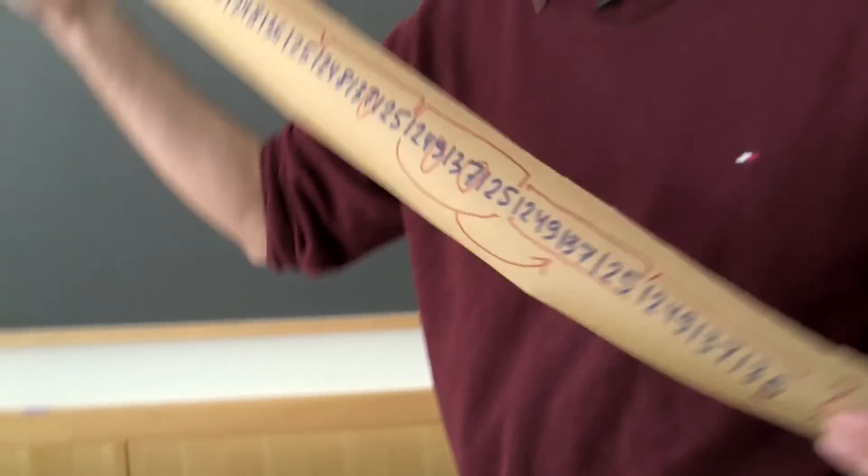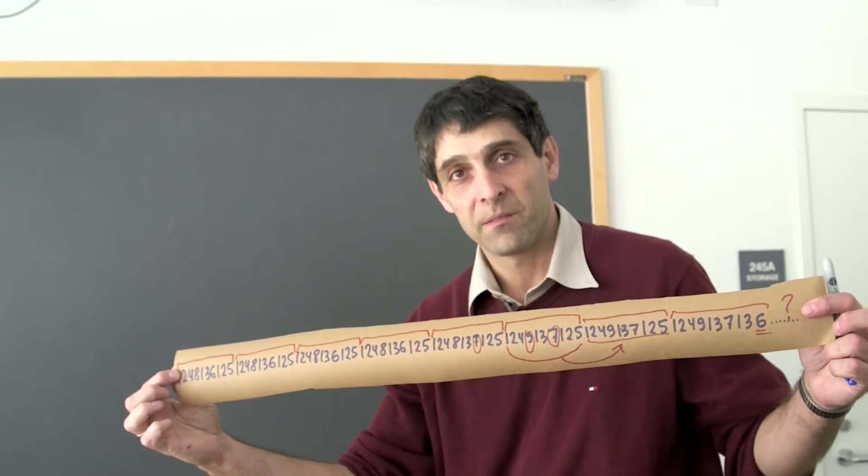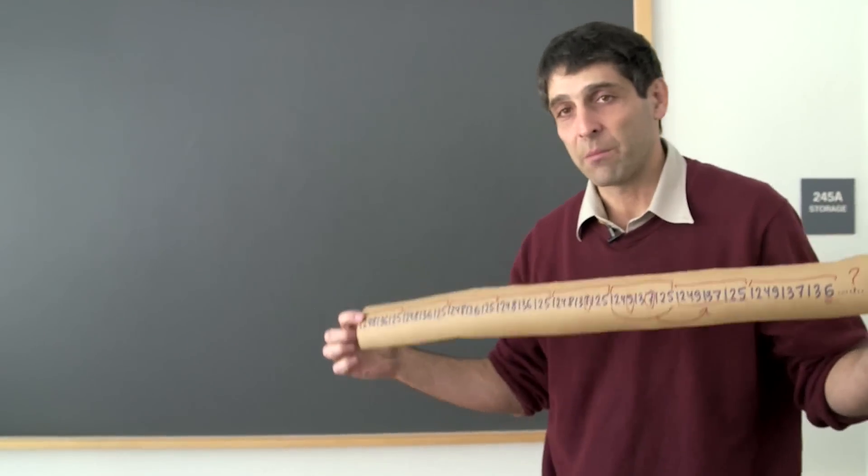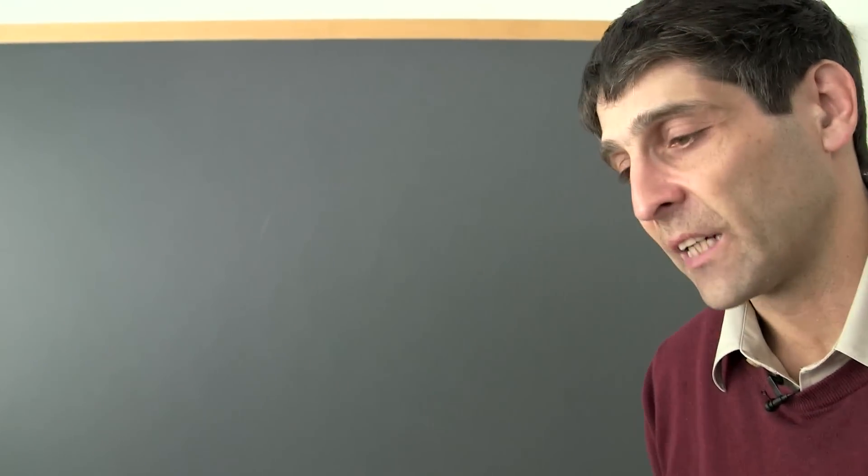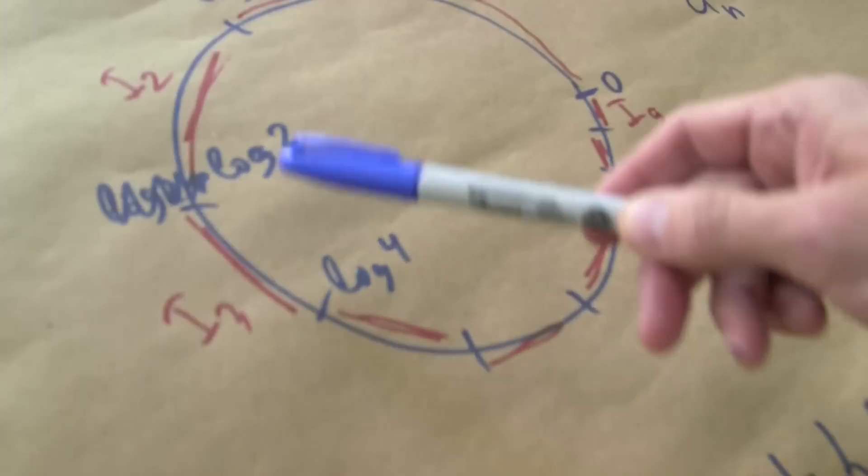So actually we see that this huge system of powers of two, huge sequence of powers of two, it is never going to repeat infinitely. It's aperiodic. That's something that follows from the fact that log 2 base 10 is not a rational number. That's an exercise. You can prove it or you can watch some other videos where this is proved. And this is a basic property of irrational rotations of the circle.